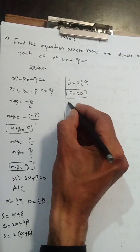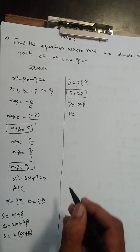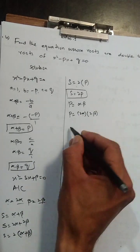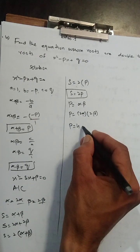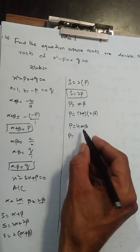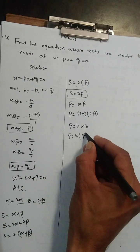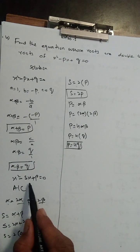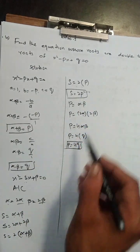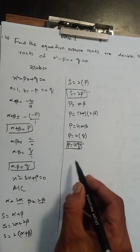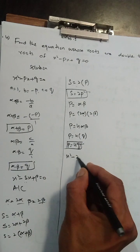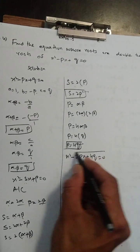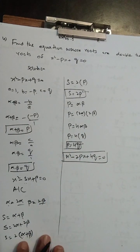Ab equation mein sum ki jagah 2p aur product ki jagah 4q rakhenge: x² - 2px + 4q = 0. Ye hai required equation of the given roots.